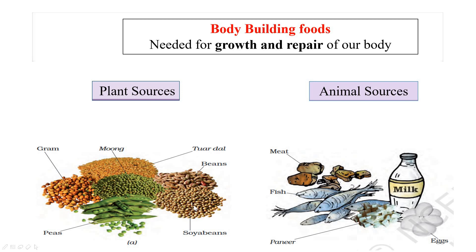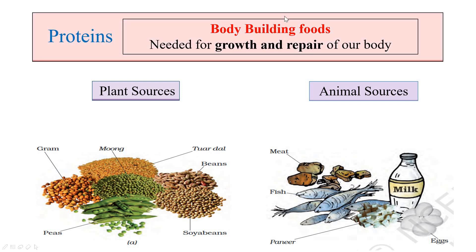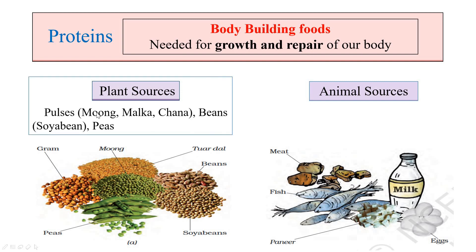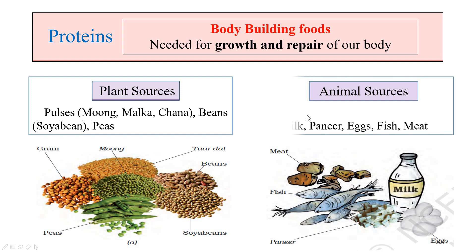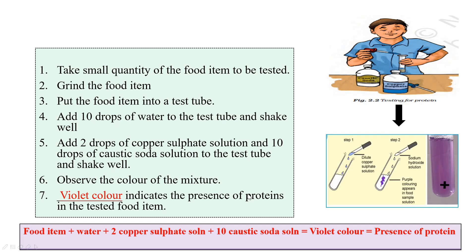Let's now study about proteins. Proteins are called body-building foods and are needed for growth and repair of our body. Pulses such as moong, masoor, and chana, and beans such as soya bean and peas are plant sources of proteins. Milk, paneer, eggs, fish, and meat are animal sources of proteins.